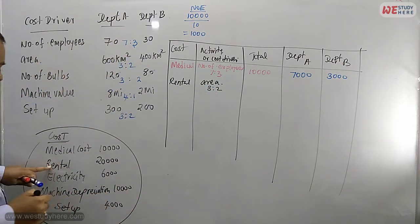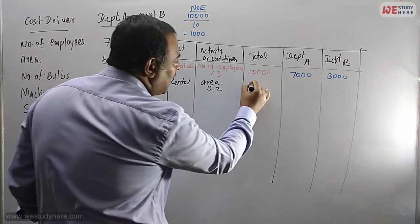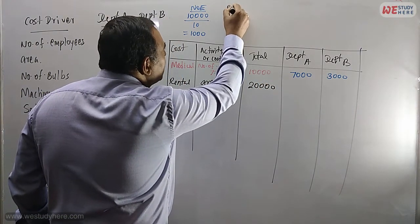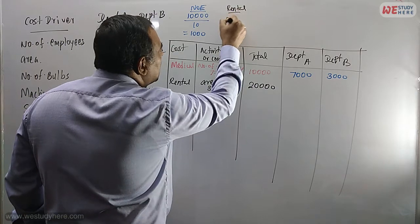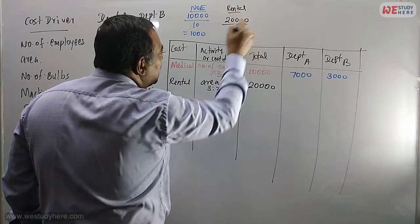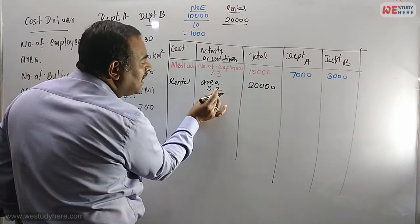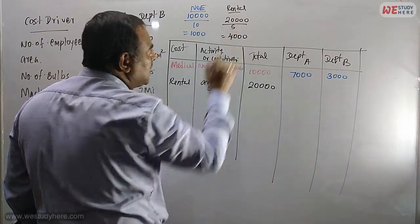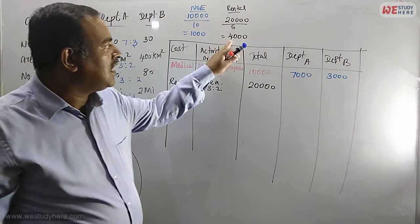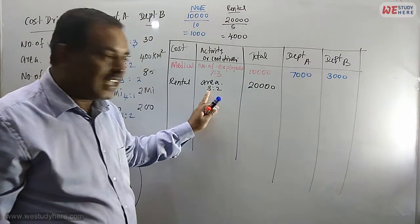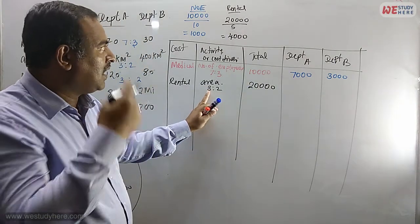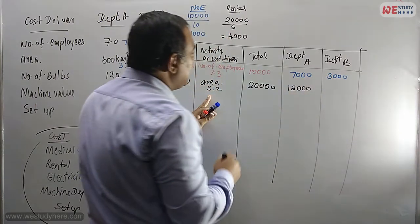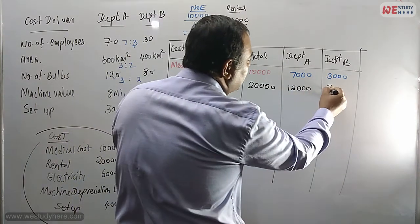Rental total is 20,000. Divide 20,000 by 5 (since 3 + 2 = 5): that gives 4,000 per portion. Department A: 3 × 4,000 = 12,000. Department B: 2 × 4,000 = 8,000.